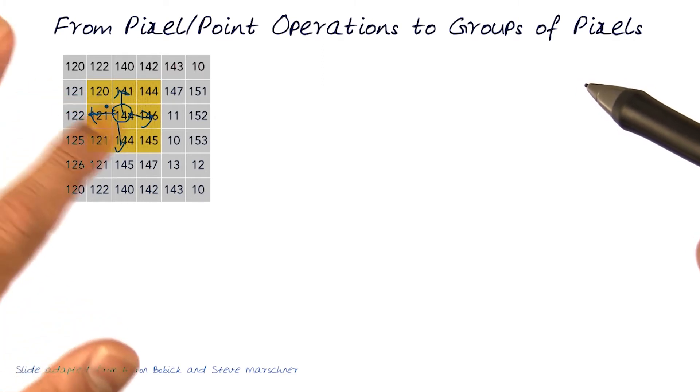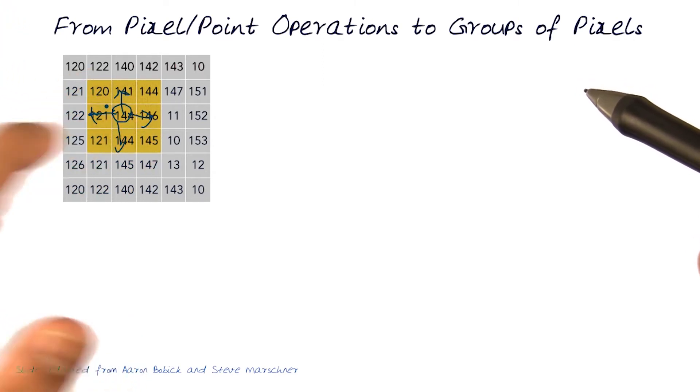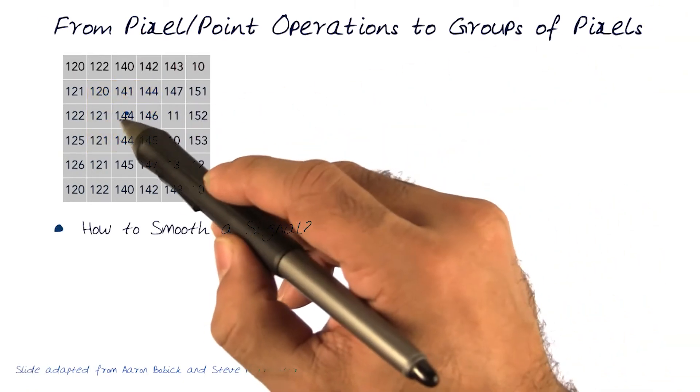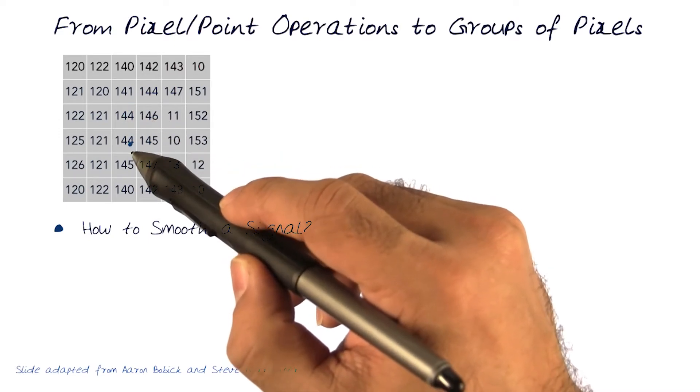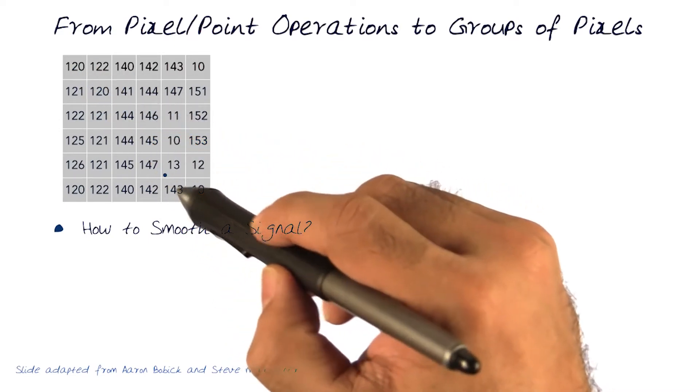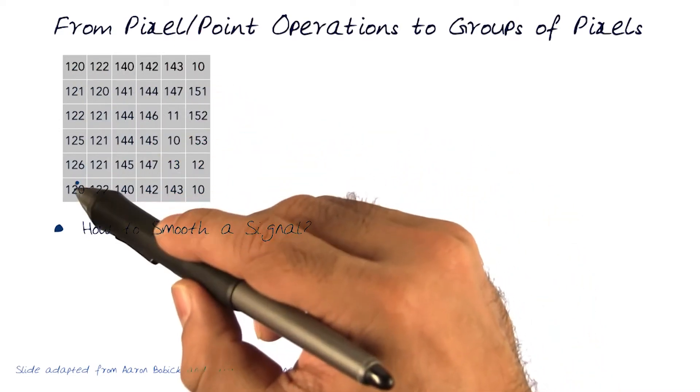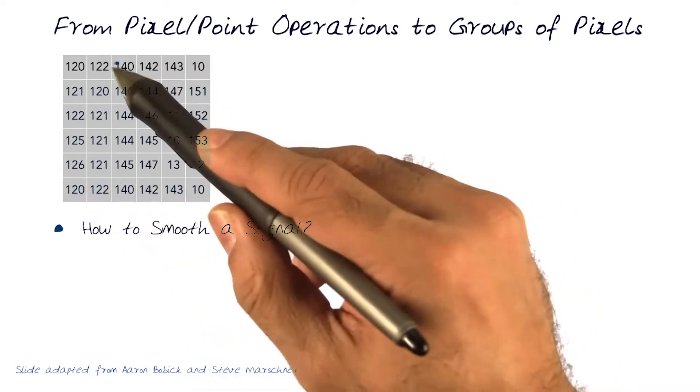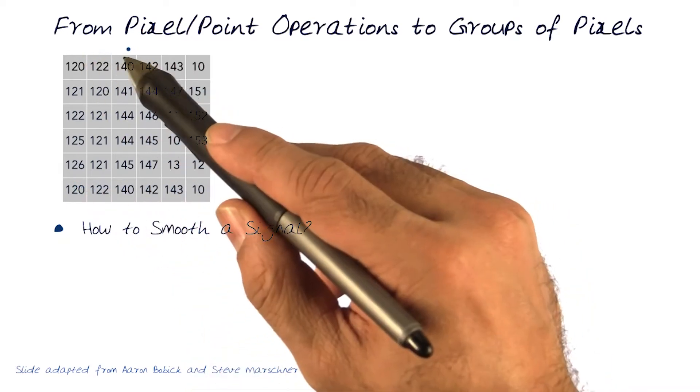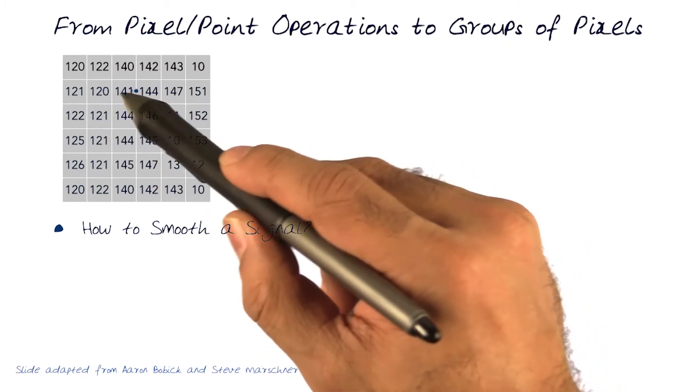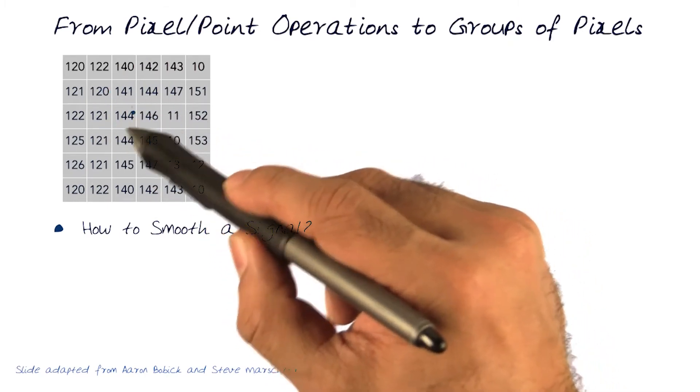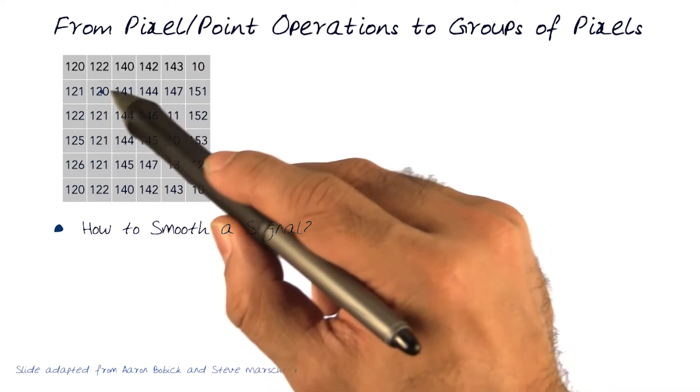So how do we actually now start using information, not just at that point, but around that specific point? So the question now we're interested in is, how do we smooth the signal? Again, an image is represented as a matrix with basically the intensity signals now inputted into each and every element, which now I can traverse by looking at the indices i and j. Now we're interested in saying, okay, I want to take this three by three neighborhood and smooth out the value here with respect to what's happening around it.